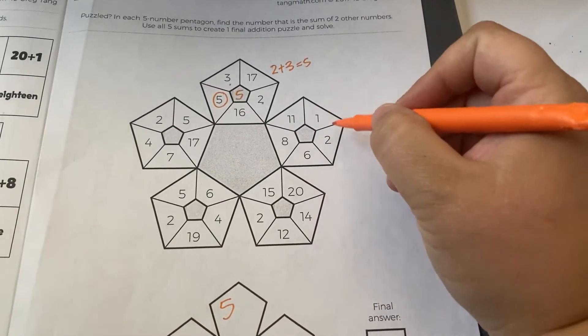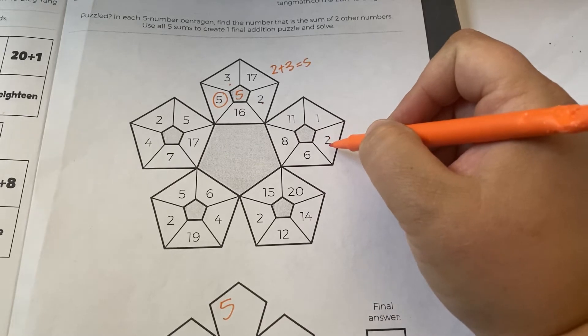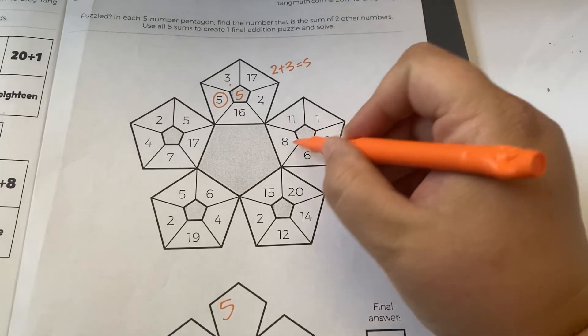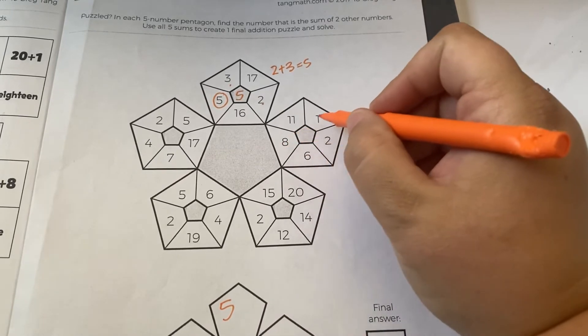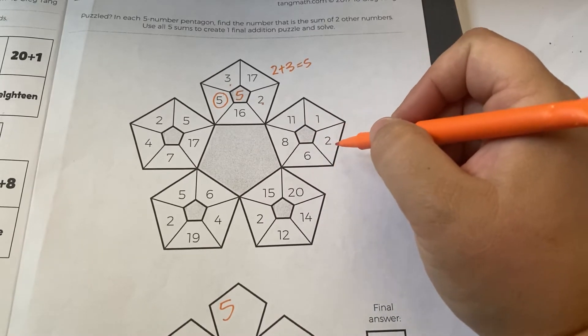Okay let's look at this one. One and two make three, no. One and six make seven, one and nine make... sorry one and eight make nine, one and eleven make twelve, that doesn't work. Let's try something else.